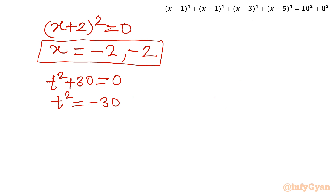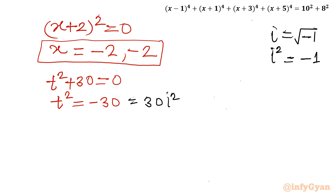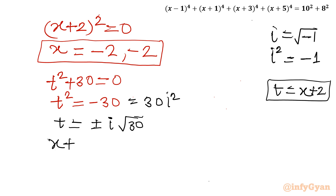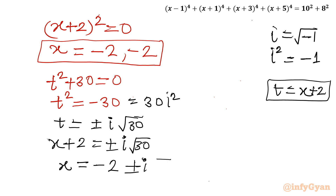Since t² = −30 is negative, complex solutions will come. We know i² = −1, so t² = 30i², meaning t = ±i√30. Substituting back t = x + 2: x + 2 = ±i√30, so x = −2 ± i√30.